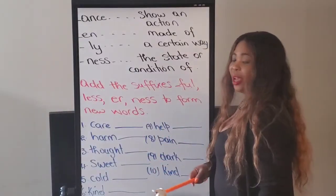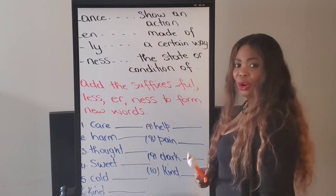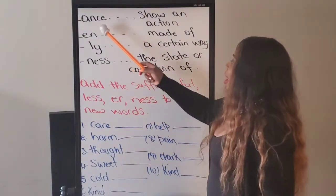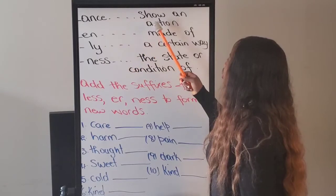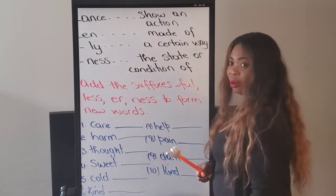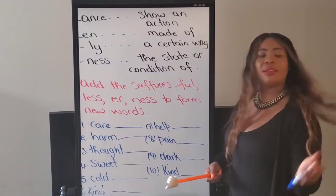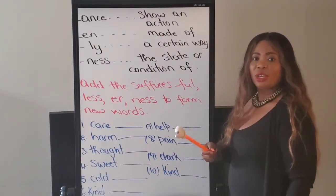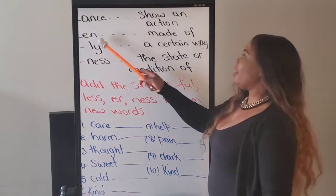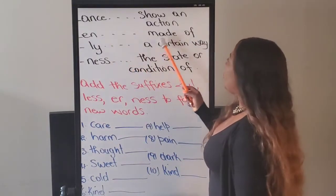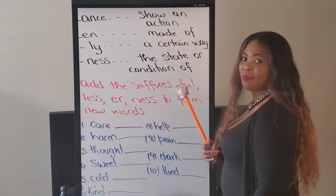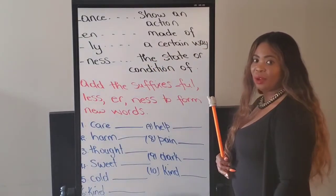Now guys, the suffixes continue. ANTS — it shows an action, like 'continuance.' N — made of, it is made up. LY — a certain way, so once you see LY it means a certain way.